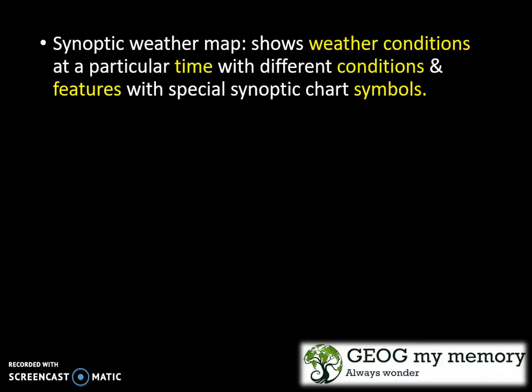Basically, synoptic weather maps show weather conditions at a particular time with different conditions and features with special synoptic chart symbols.